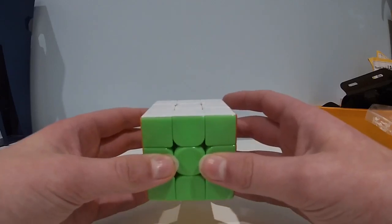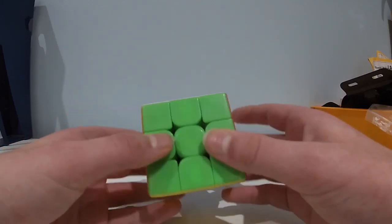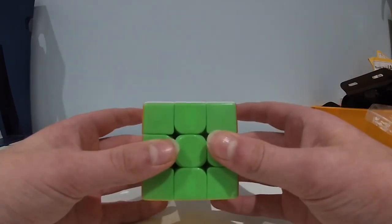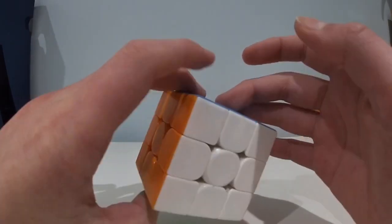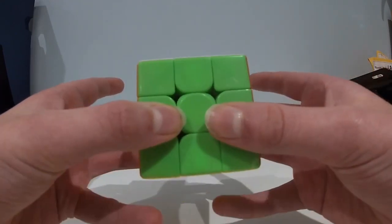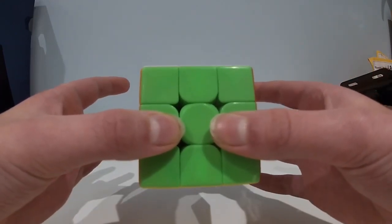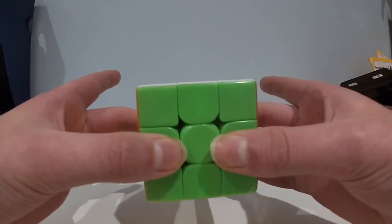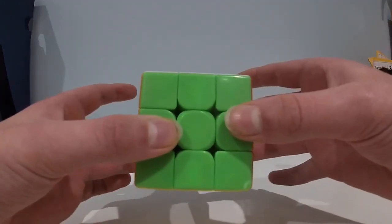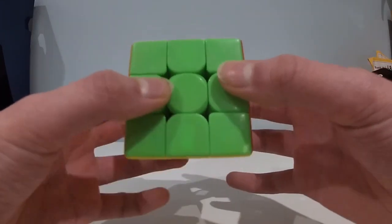So first thing is you need to know the home grip. The home grip is this grip I've got right now. Your two thumbs on front and your ring, middle and index fingers in the back, and your pinkies off to the side to allow you to do flicks.